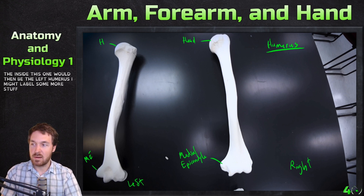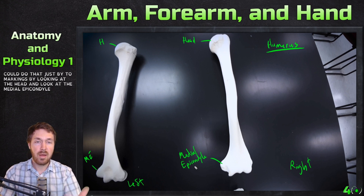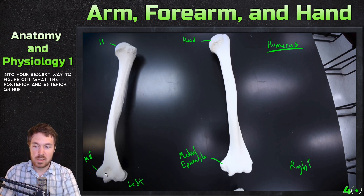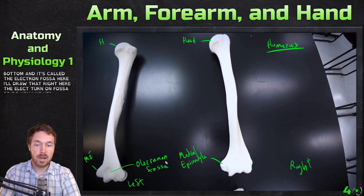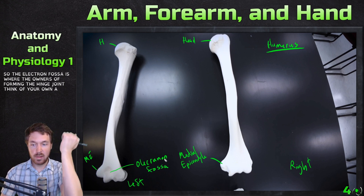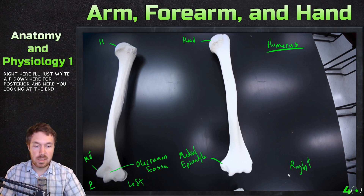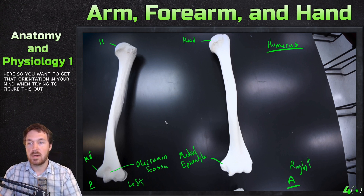You can orient left and right just by looking at two markings: the head and the medial epicondyle. Now, to figure out what's posterior and anterior on the humerus — the biggest clue is that the posterior side has a deep pocket at the bottom called the olecranon fossa. The ulna, forming the hinge joint, needs that deep groove on the posterior side. So the side with the olecranon fossa is posterior, the other is anterior.